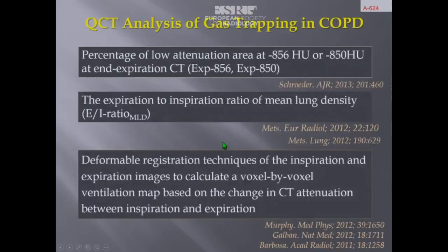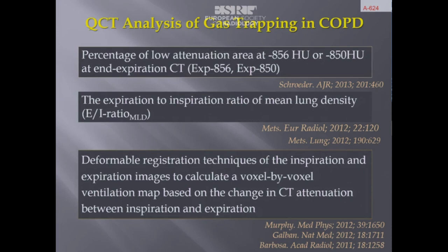The best technique to assess the extent of gas trapping in COPD patients is quantitative imaging analysis using lung densitometry. Lung densitometry is a thresholding technique; the best threshold is minus 856 or minus 850 HU on expiratory scans. Another metric is the expiration-to-inspiration ratio of mean lung density. However, in COPD patients, emphysema is also responsible for low attenuation on expiratory scans. To eliminate emphysema from the volume of interest, double thresholding is used: minus 950 and minus 856 HU.